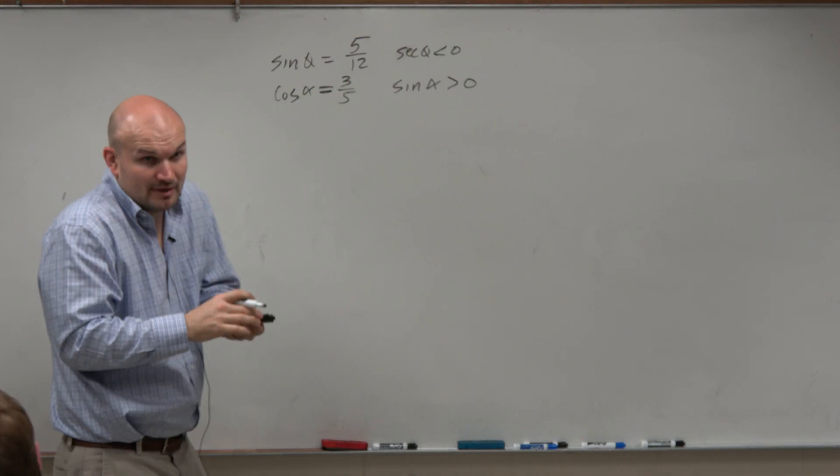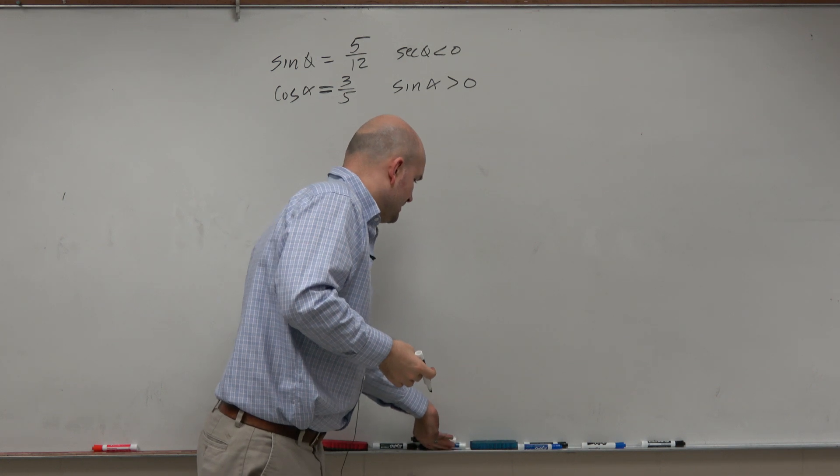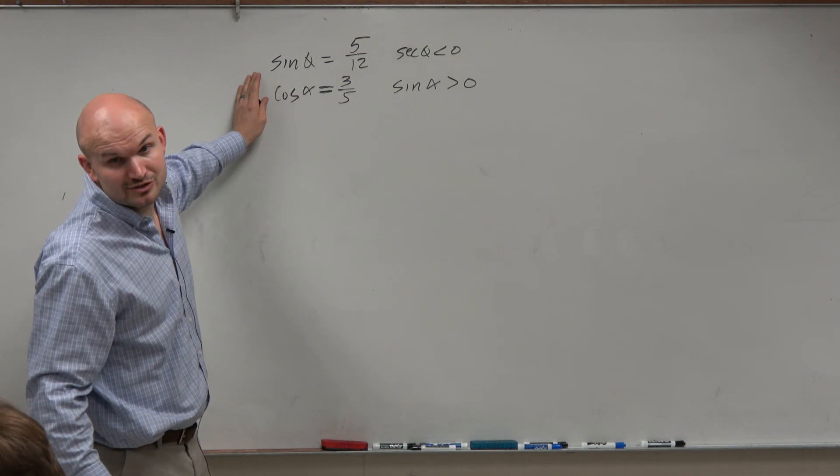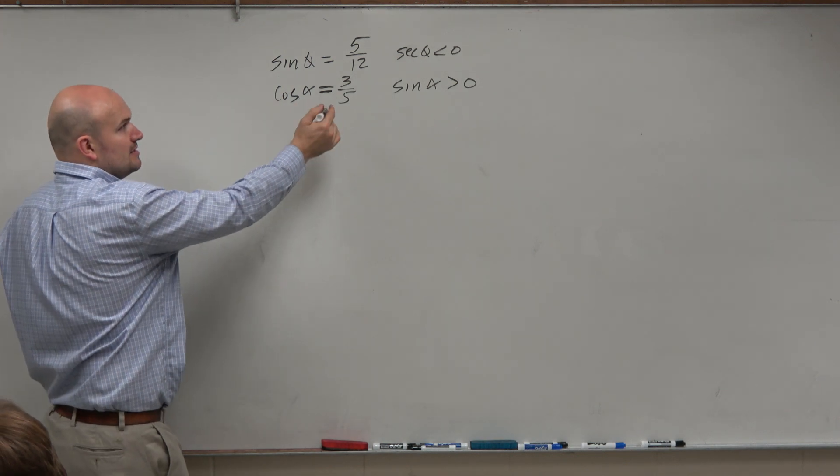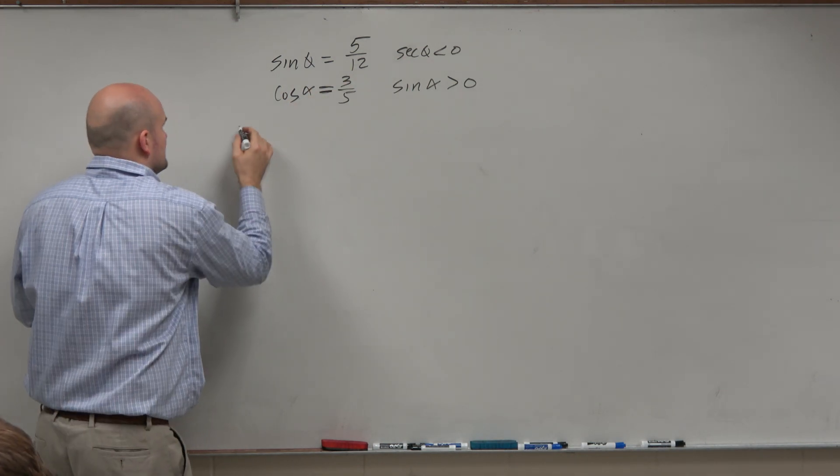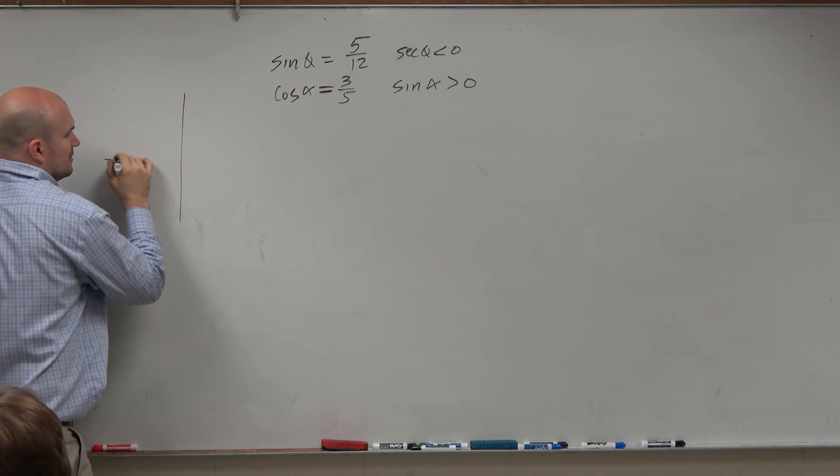So we have, now again, we don't have the unit circle, right? So we have some relationships. So we're going to want to go back to using just regular good old triangles. But it's not just random triangles. We have triangles that are based on constraints. So we're going to want to use the quadrants.